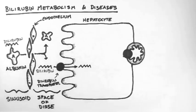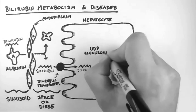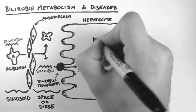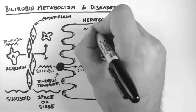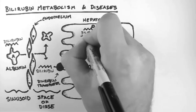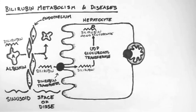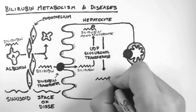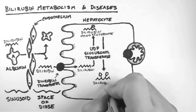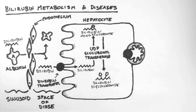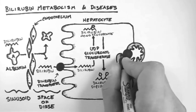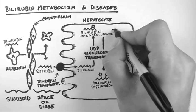The bilirubin in the hepatocyte then gets acted upon by UDP glucuronyl transferase. This attaches glucuronic acid to bilirubin to produce bilirubin monoglucuronide, which in turn can have another glucuronic acid attached to produce bilirubin diglucuronide. Collectively, bilirubin mono and diglucuronide are known as conjugated bilirubin.